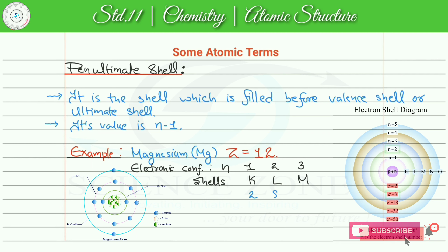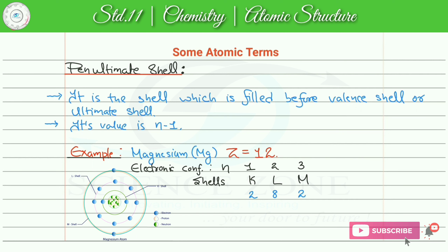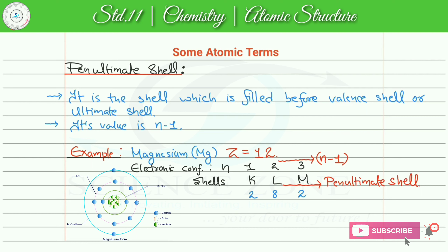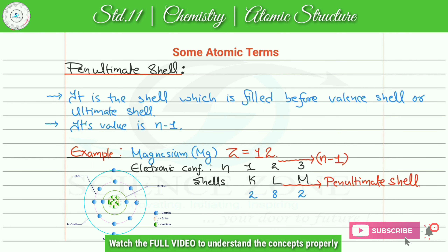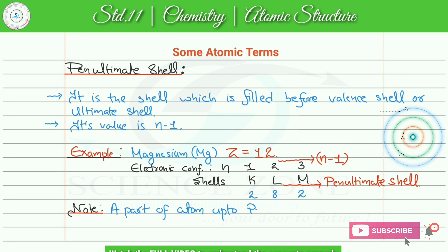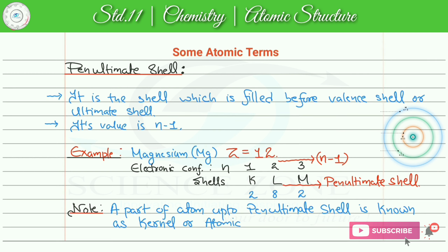Electrons fill करेंगे तो first shell में 2 electrons आएंगे, second shell में 8, और remaining 2 electrons जाएंगे third shell में। हमारा जो third shell है, that is ultimate shell or valence shell, क्योंकि उसमें valence electrons present हैं। जो shell valence shell से just before fill हुआ है, that is n-1, and this L shell is our pen ultimate shell।